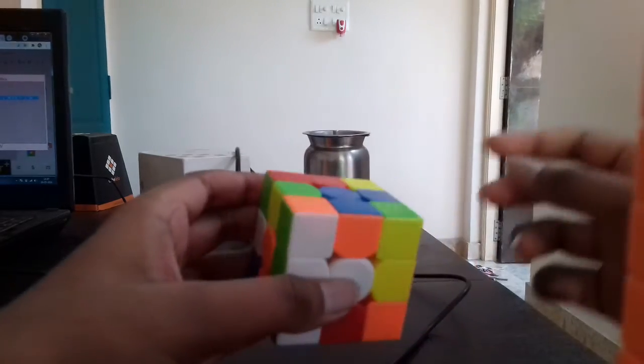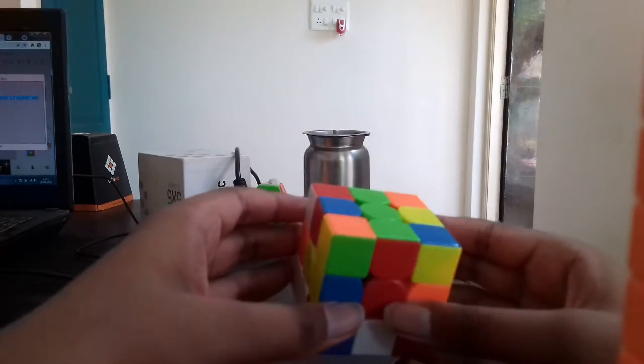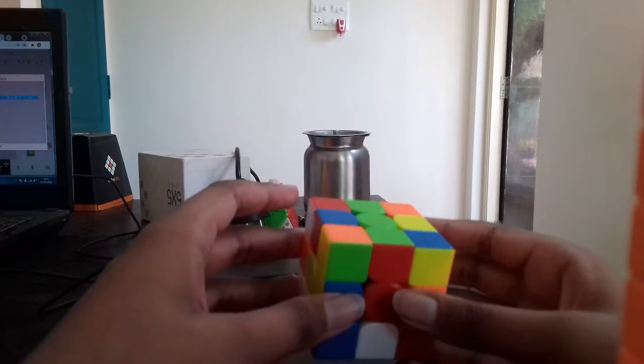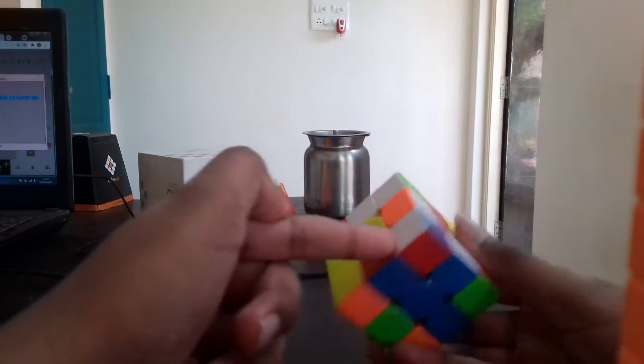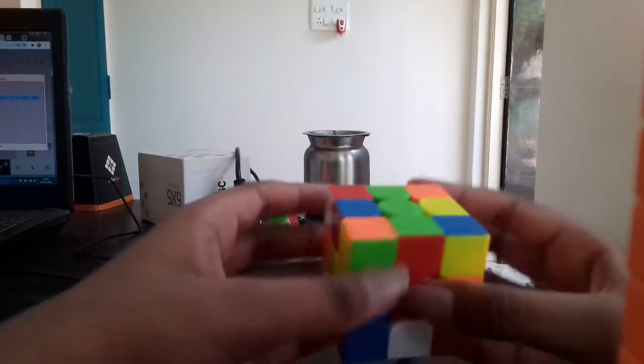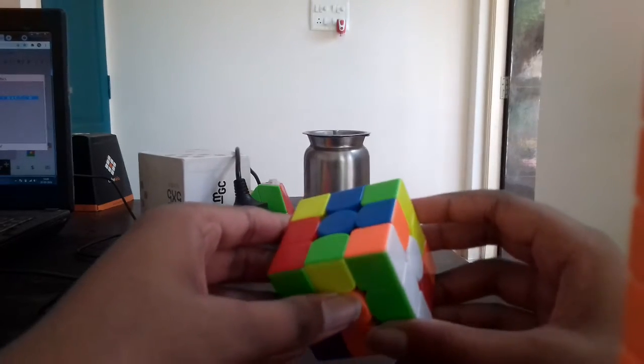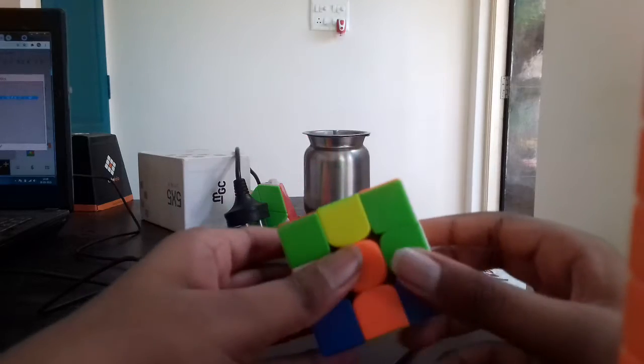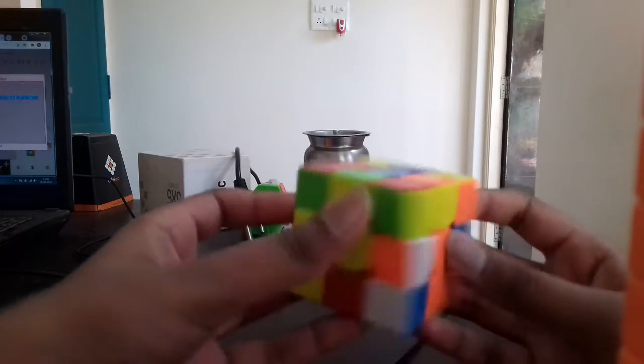Okay, so there are 2 options on how we can do the cross. You can either insert the cross piece like this and then do D' and then L2. Or I looked at green and noticed that the cross was almost solved. So I did R' and then U rotate.